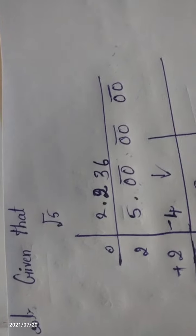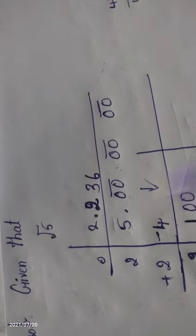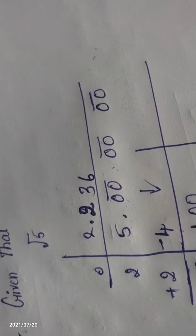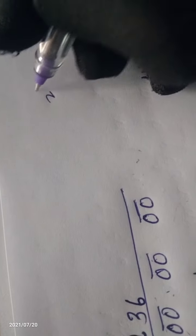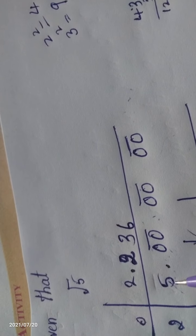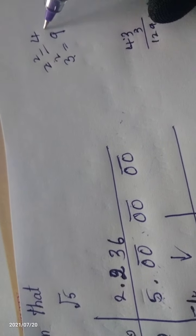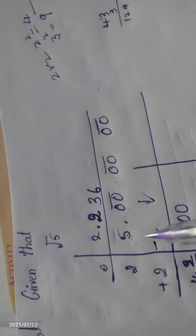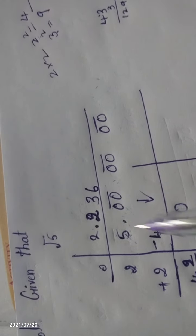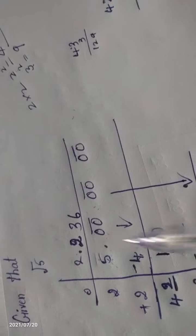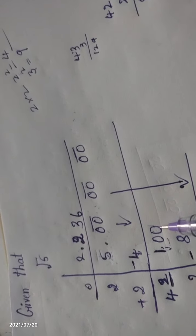In the first step, we look at 5. We need the largest perfect square less than or equal to 5. Two squared is 4, three squared is 9 — so we take 2. We write 2 in the quotient. Two times 2 is 4. Subtract: 5 minus 4 equals 1. We bring down the first pair of zeros, making it 100.